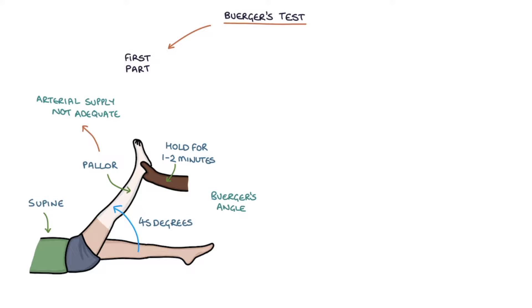Buerger's angle refers to the angle at which the legs turn pale due to an inadequate blood supply. For example, a Buerger's angle of 30 degrees means that when the leg is held at 30 degrees, it goes pale.